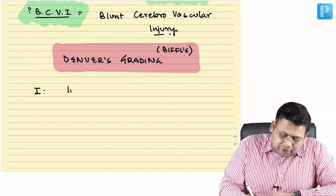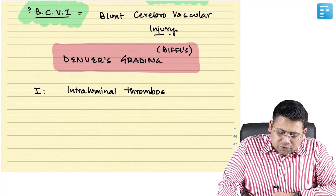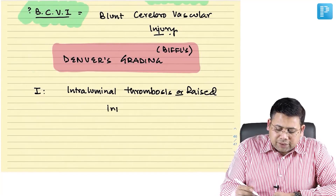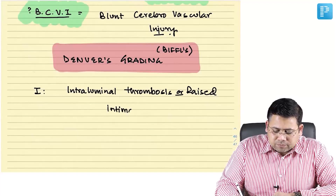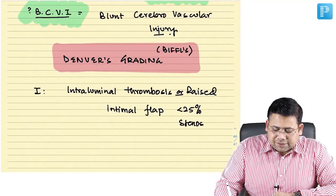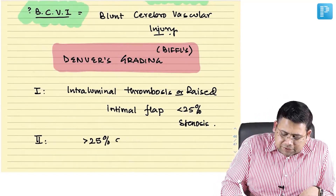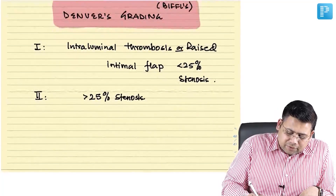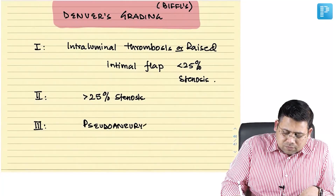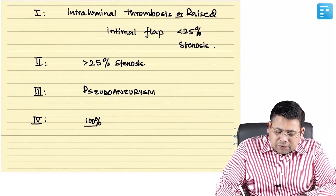Grade 1 is intraluminal thrombosis or raised intimal flap with less than 25% stenosis. Grade 2 involves greater stenosis. Grade 3 is pseudoaneurysm. Grade 4 is 100% obliteration.